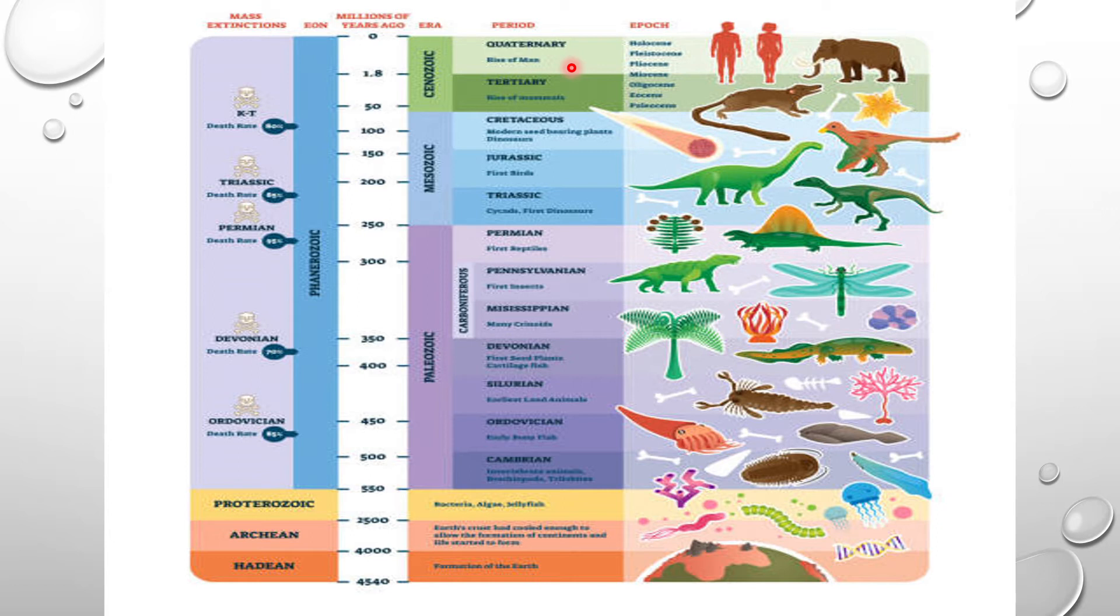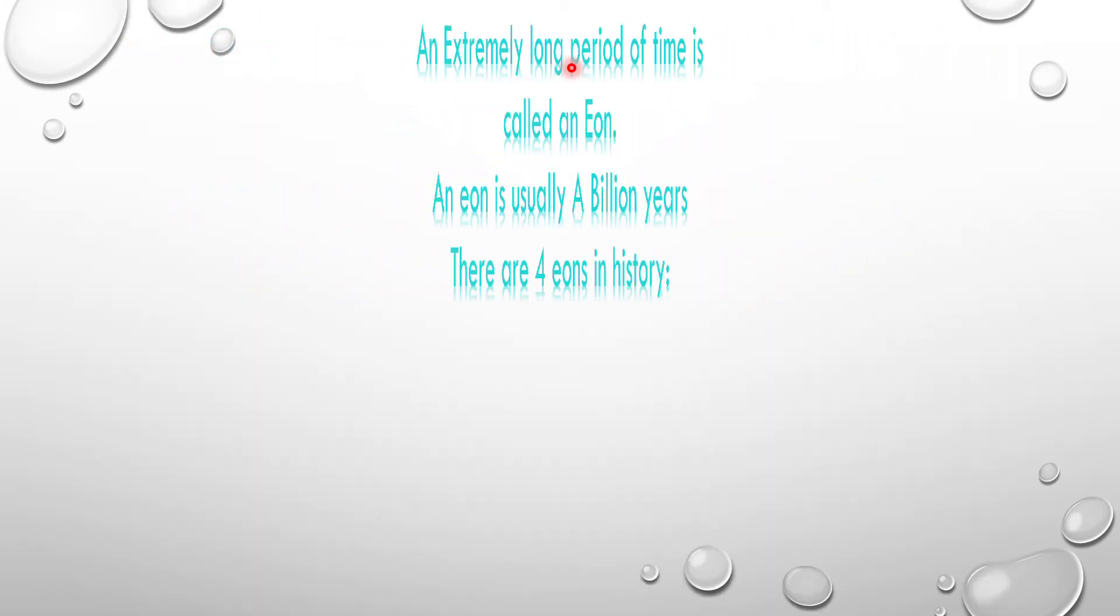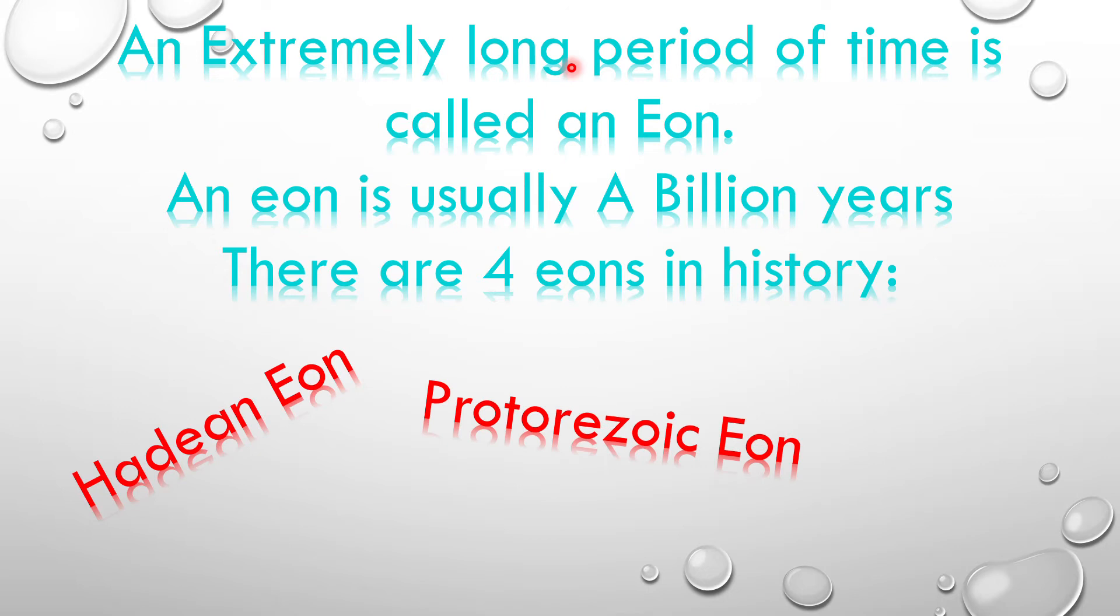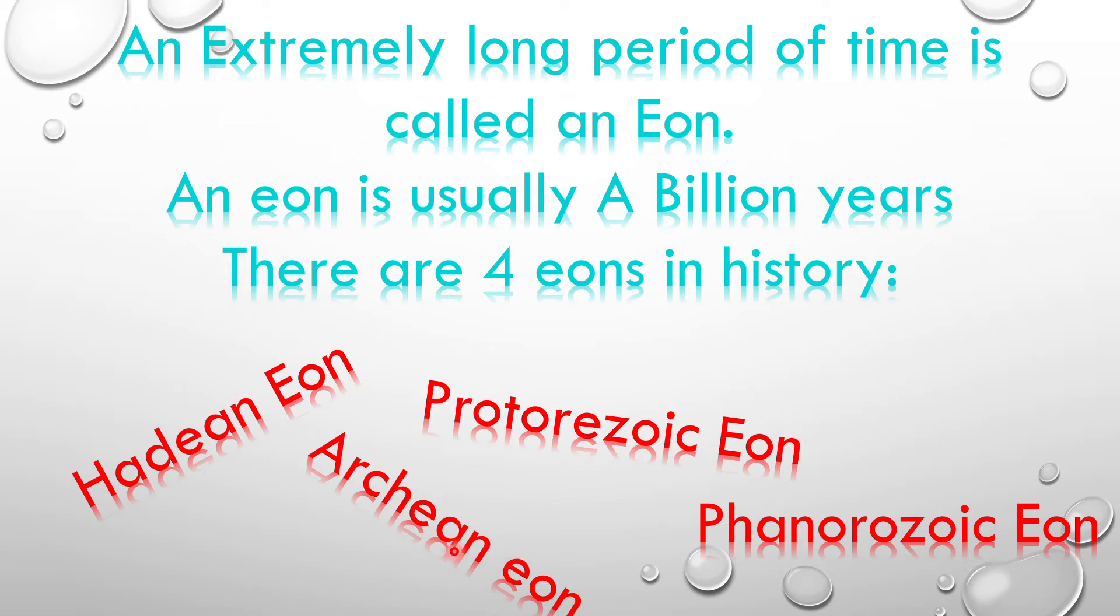The eons are the largest, extremely long periods. An eon is usually a billion years and there are four eons. The first is Hadean eon, the starting of Earth. Then Proterozoic eon is the third. Phanerozoic eon. Archean eon was the second eon, when Earth started to get bacteria.